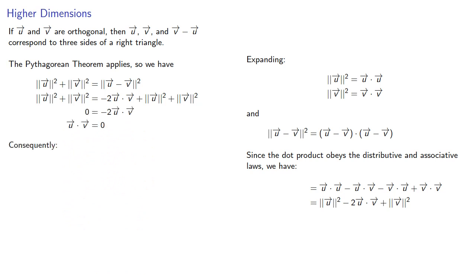Consequently, if two vectors are orthogonal, their dot product is zero.